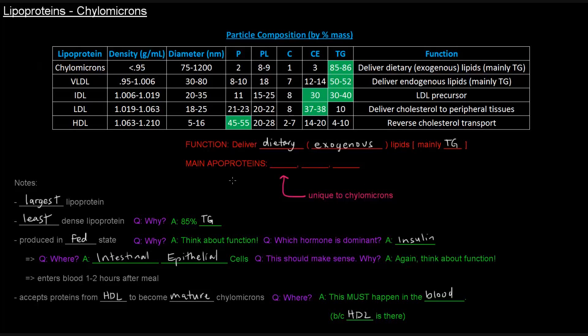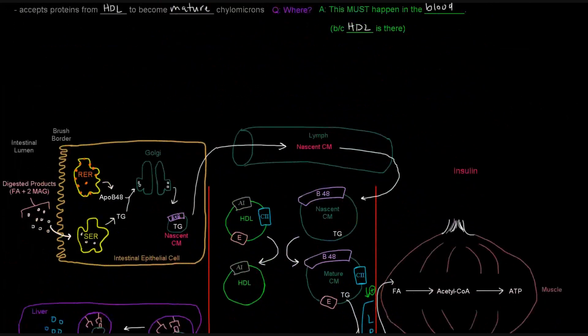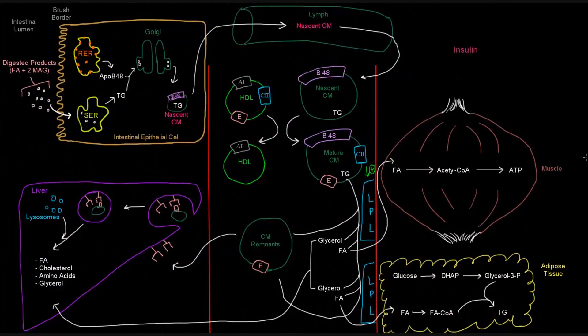So what are the main apoproteins in chylomicrons? The key one is B48. B48 is unique to chylomicrons. There's also C2 and E, and those come from HDL. Let's take a look at this. This might be kind of messy, but just follow me through it and we should be okay.